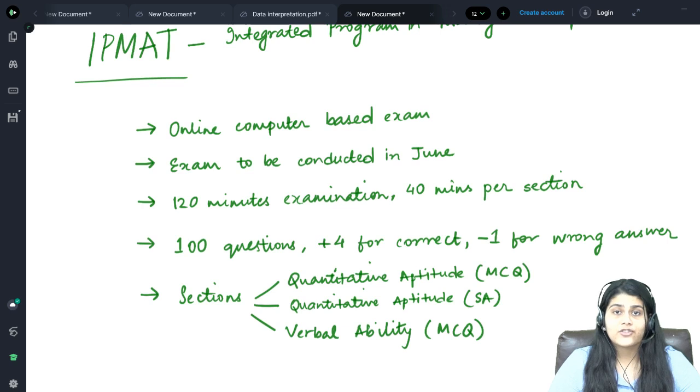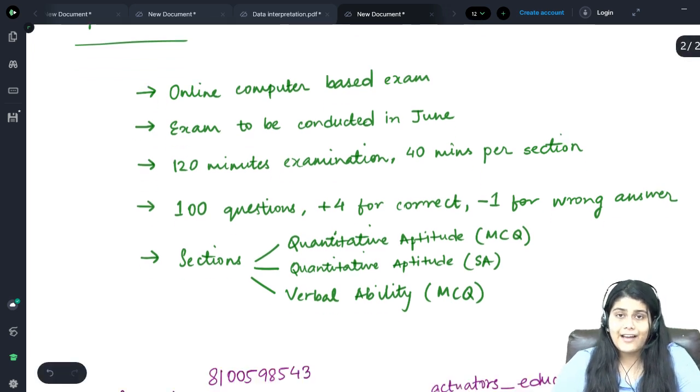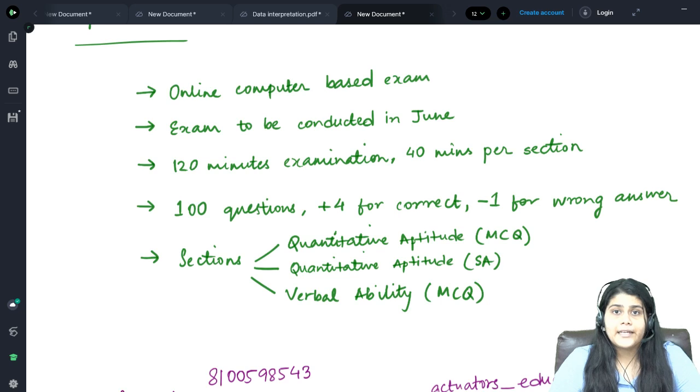Students have to be extremely careful that they do not attempt any question just by luck until and unless they are very sure of it, because there is negative marking and it can bring down your score unnecessarily. The Quantitative Aptitude syllabus mainly consists of everything that you all have done up till now and some other additional topics.